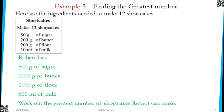We have ingredients for 12 shortcakes. Spend time to pause the video and make sure you understand the context. Robert has 500 grams of sugar, 1000 grams of butter, 1000 grams of flour, and 500 ml of milk. We need to work out the greatest number of shortcakes Robert can make. Every batch of ingredients you take is for 12, and you can keep going for another batch to make 12, and another, and so on, until one of these ingredients runs out.